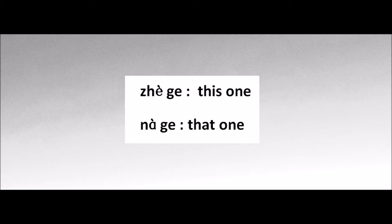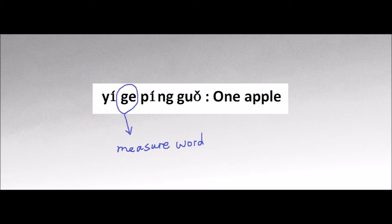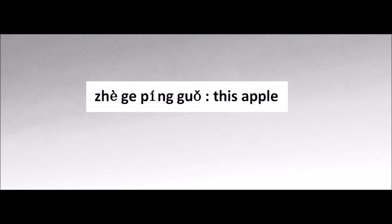个 is a general measure word. When we refer to one object or one person, we need to use this word. For example, 一个苹果 — one apple. 一 means one, 个 is the general measure word, and 苹果 means apple. So 一个苹果 means one apple. 这个苹果 means this apple.